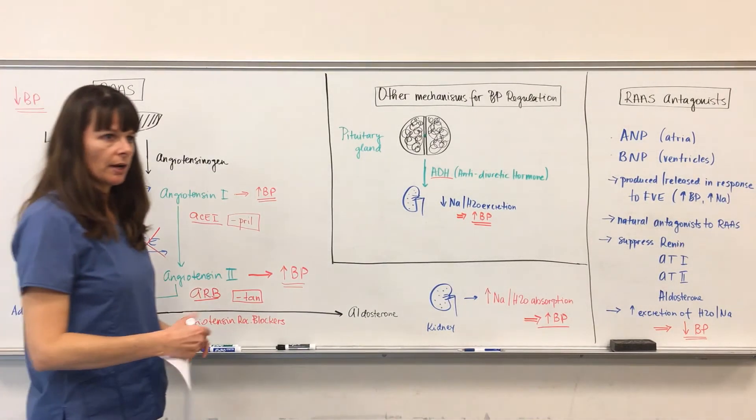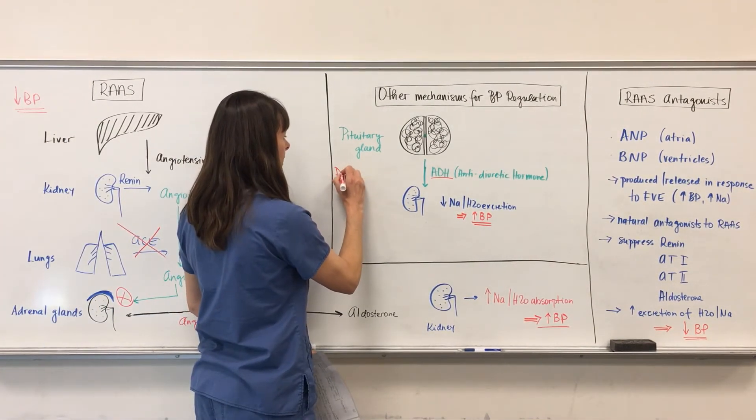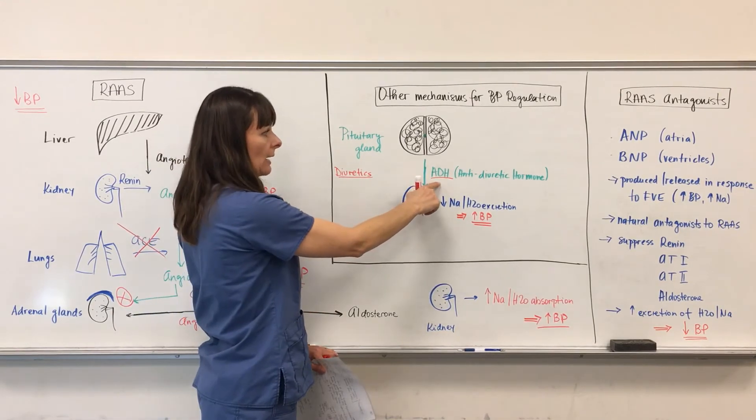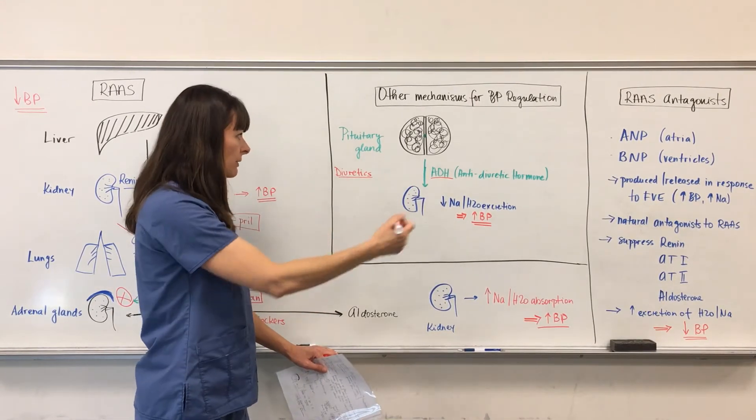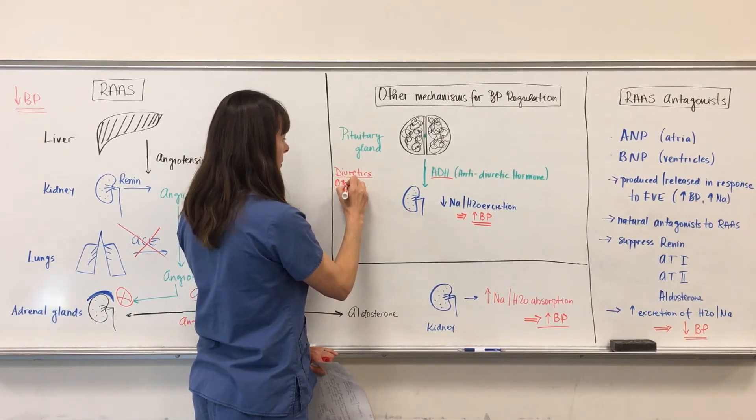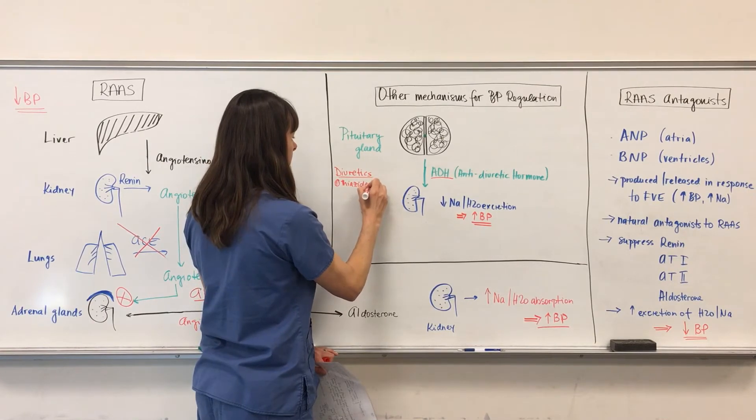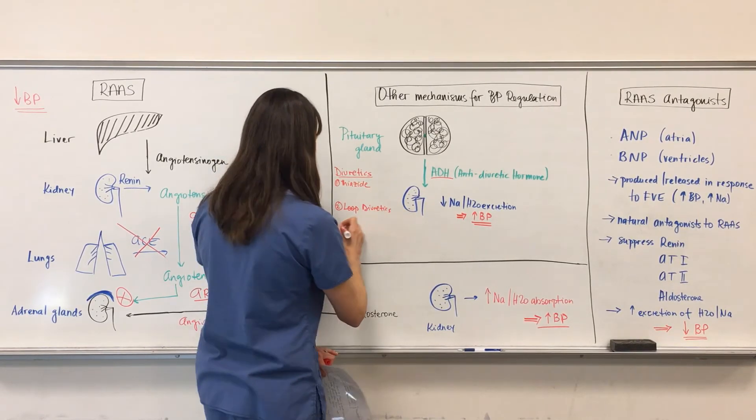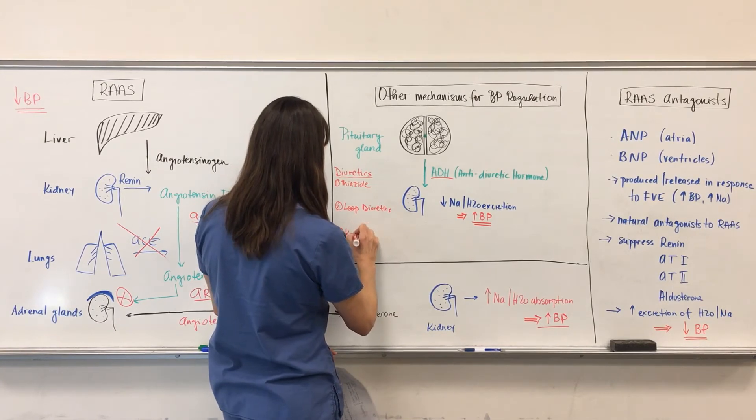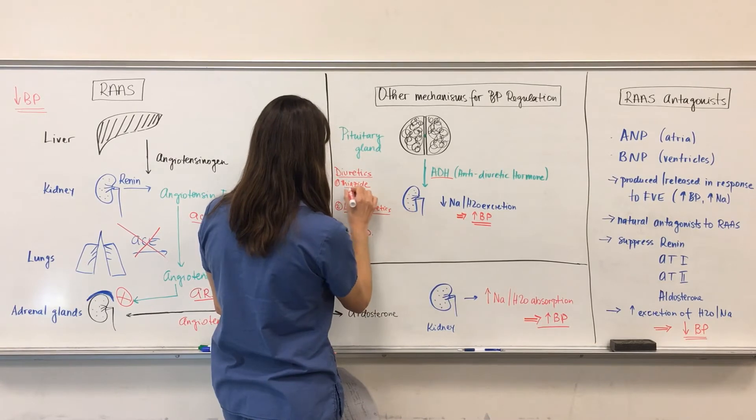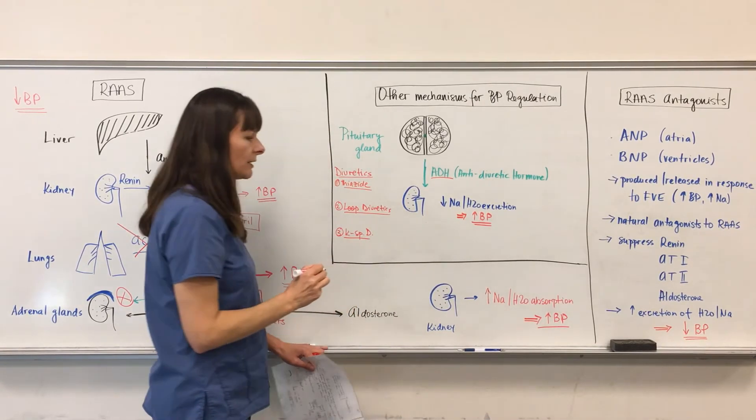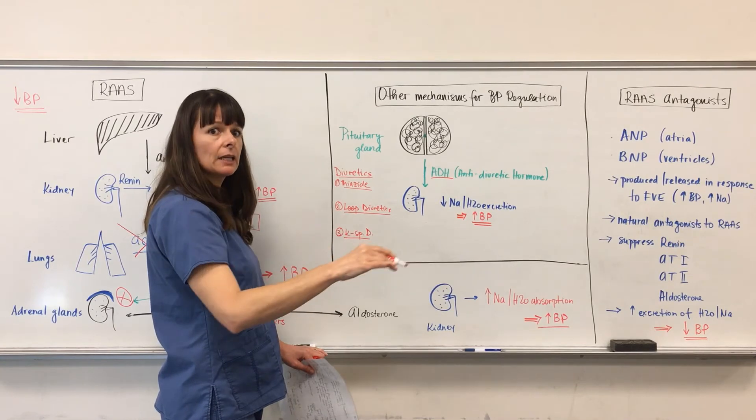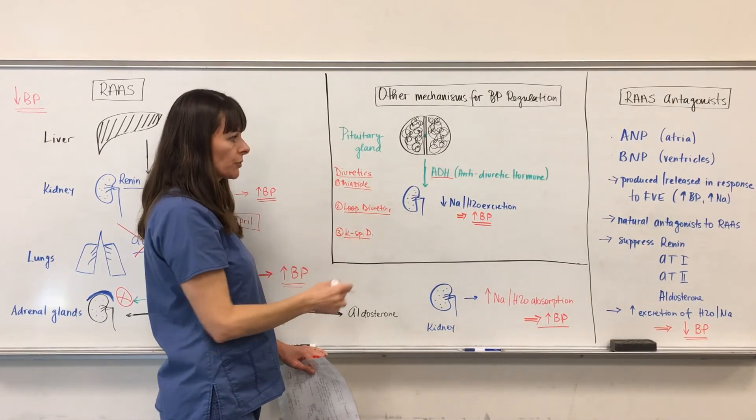Now, other medications which are pretty self-explanatory are diuretics here. And diuretics will basically counteract the anti-diuretic hormone. So now, we give the patients diuretics. And there are three different types of diuretics, which are the thiazide diuretics, the loop diuretics, and the potassium sparing diuretics. They basically just work on different parts of the kidney to help decrease the sodium and water reabsorption and increase the excretion of sodium and water, therefore to decrease the blood pressure.